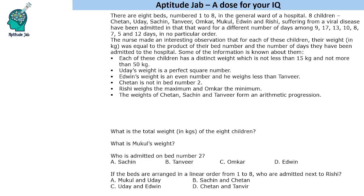And some more information is known about these people. So it is given that each of these children has a distinct weight which is not less than 15 kg and not more than 50 kg. So that is minimum 15 is possible and maximum 50. So it has to be within this range.